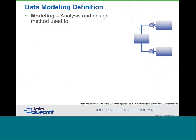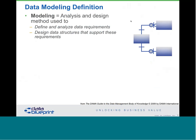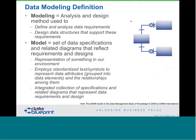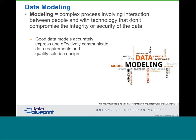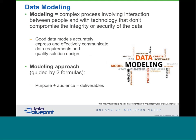So let's dive in with the modeling. What is modeling? We do analysis and design to determine and understand the data requirements for whatever our customers are trying to do, and also to design the data structure. The model itself is a set of data specifications — it's entities, the attributes that make up an entity, and how those things are grouped together. Modeling is the process of figuring out what to do to make a solution for people that doesn't compromise the integrity or security of the data. Good data models communicate the requirements and the quality of the solution design, and we're guided by two formulas: purpose plus audience equals deliverables, and deliverables plus resources plus time equals the approach.